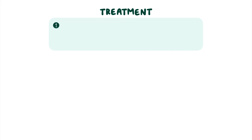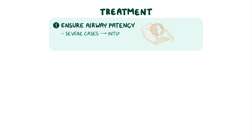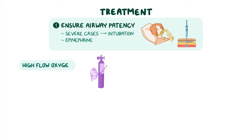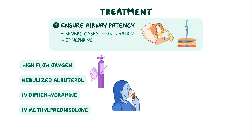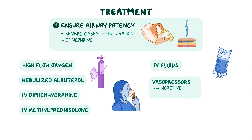In terms of treatment for anaphylactic shock, the first step is to ensure airway patency, which in severe cases might require intubation, and to administer epinephrine intramuscularly. Additionally, high-flow oxygen, nebulized albuterol, IV diphenhydramine, and IV methylprednisolone can be administered. Early resuscitation with IV fluids is also required. In case of persistent hypotension, vasopressors like norepinephrine or vasopressin should be used.